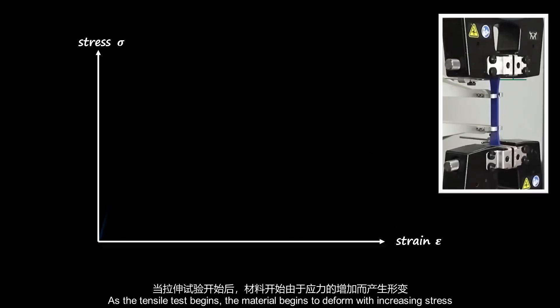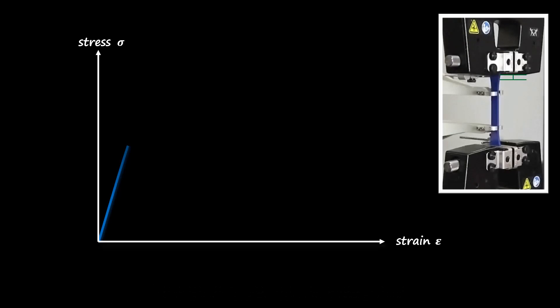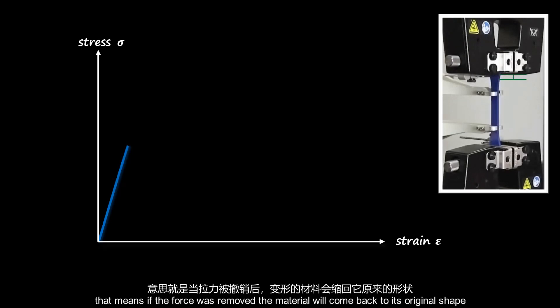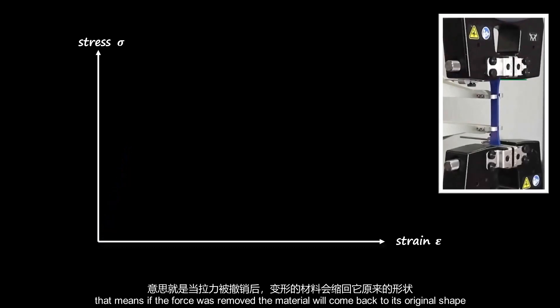As the tensile test begins, the material begins to deform with increasing stress. The region of the linear graph is called elastic deformation. That means if the force was removed, the material will come back to its original shape.